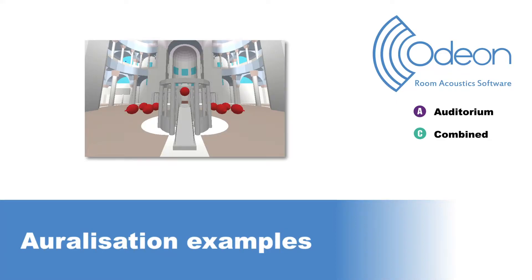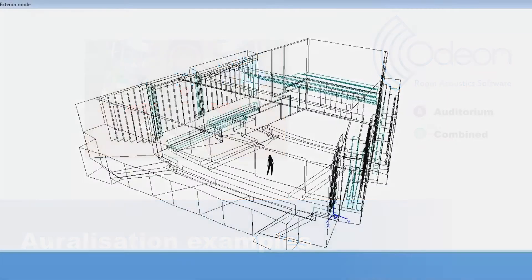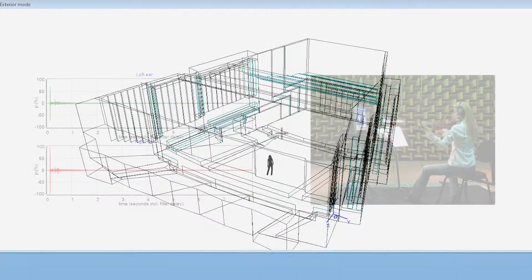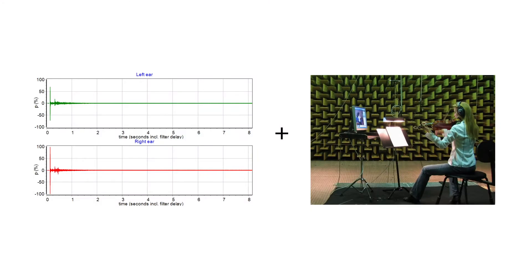Hello, this is Mario from ODEON. Editions Auditorium and Combined of ODEON allow you to produce auralizations, which are simulations of the acoustics of a room model, as if you were physically standing in a specific position of the simulated space. This is achieved by combining the simulated binaural impulse response with an anechoic recording, which is a recording produced in a sound-absorbent room such as an anechoic chamber.